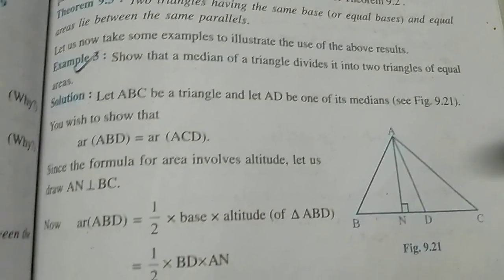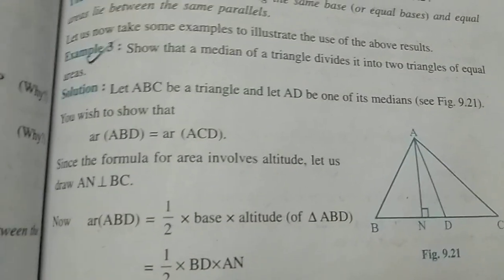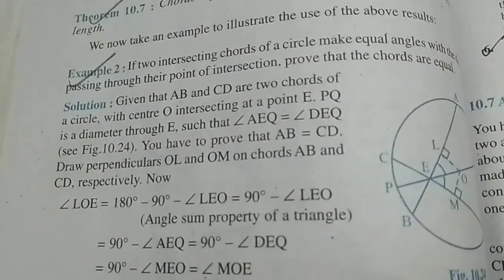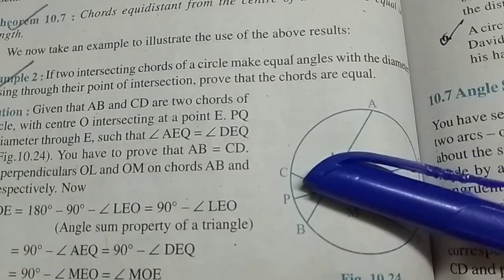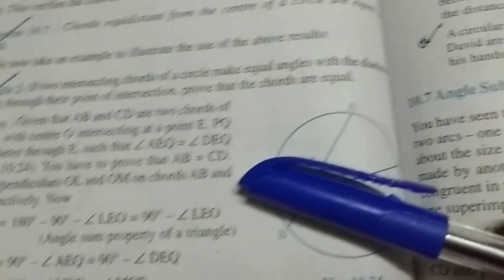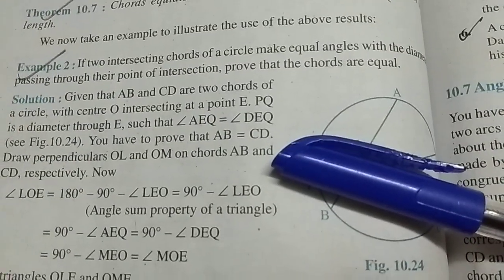Coming to chapter Circles, you have this Example 2: If two intersecting chords of a circle make equal angles with the diameter passing through their point of intersection, prove that the chords are equal. Very important proof, very important question, so practice it really well.